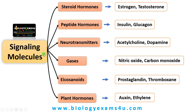Let me summarize the six classes of signaling molecules. First, steroid hormones like estrogen are hydrophobic and have nuclear receptors. Peptide hormones are proteins with cell surface receptors, whereas neurotransmitters also have cell surface receptors. Gases like nitric oxide and carbon monoxide can diffuse into the cell. Eicosanoids are lipids with cell surface receptors. Finally, plant hormones include auxin, ethylene, etc. In the next video we'll discuss the stages of cell signaling or signal transduction. Thank you so much for your support. You are with biologyexams4u.com.